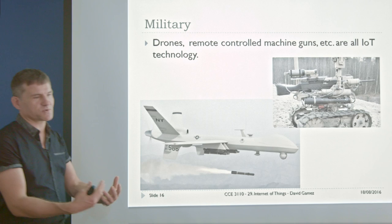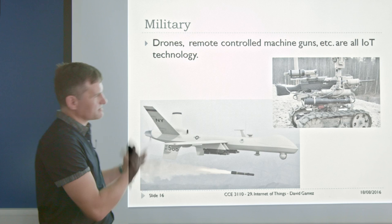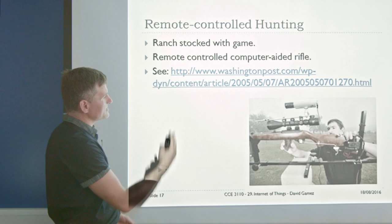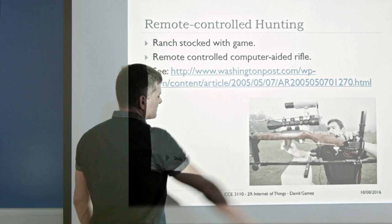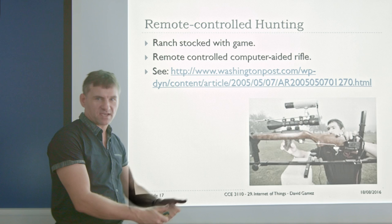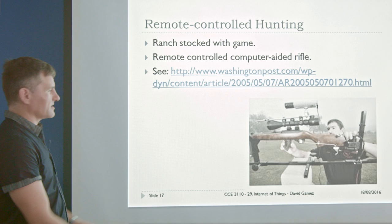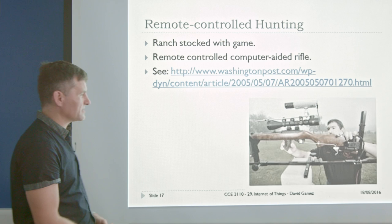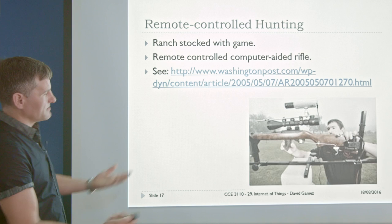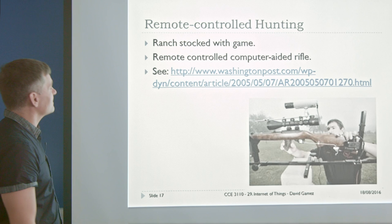There are also other issues: if soldiers are controlling things with a laptop, there's a dissociation between the soldier and the person they're killing — it becomes a bit too much like a computer game. As an Internet of Things example, one chap built a rifle on his ranch where you could pay to control the rifle and shoot deer remotely. Any technology has good and bad, and the Internet of Things has plenty of both.